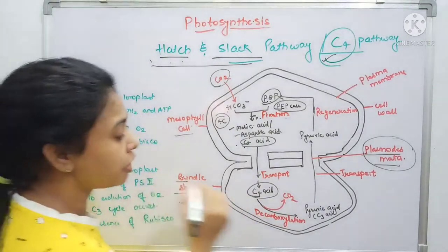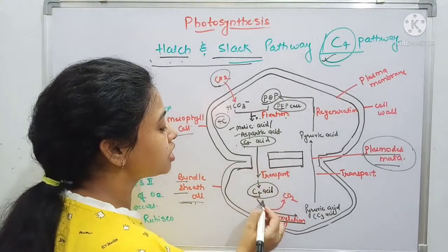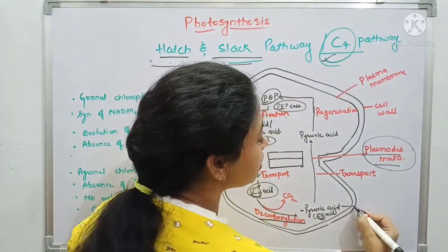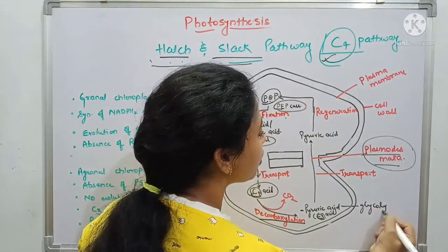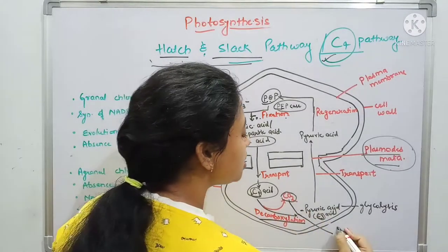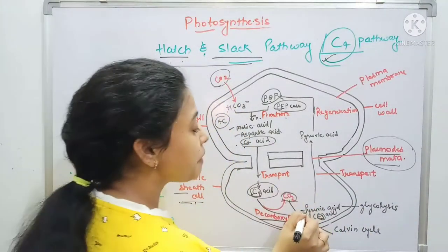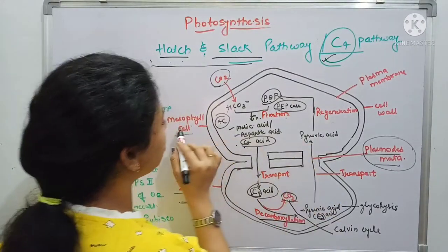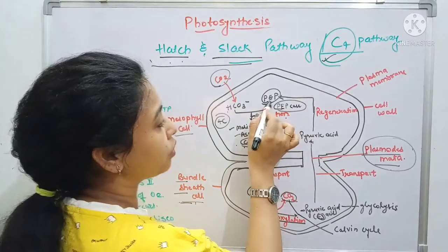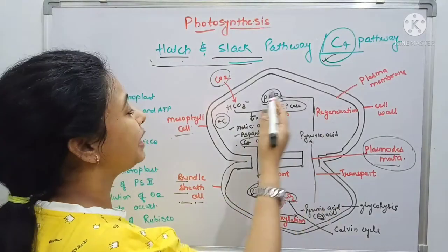After transportation of this C4 acid into the bundle sheath cell, a decarboxylation occurs — meaning the CO2 molecule gets removed from the C4 acid, and it again becomes the C3 acid, which is pyruvic acid. Pyruvic acid further takes part in glycolysis also. And the CO2 goes for the Calvin cycle — it binds with RuBP and goes for the Calvin cycle. This pyruvic acid is then transported back into the mesophyll cell and again gets regenerated into the phosphoenol pyruvate. So the pathway goes: starting from mesophyll cell, then into bundle sheath, and again completing back into the mesophyll cell.